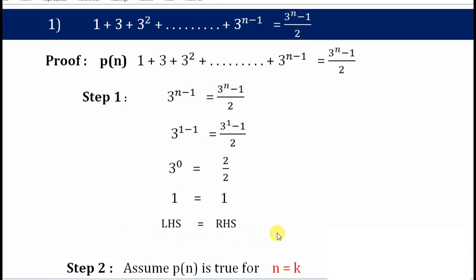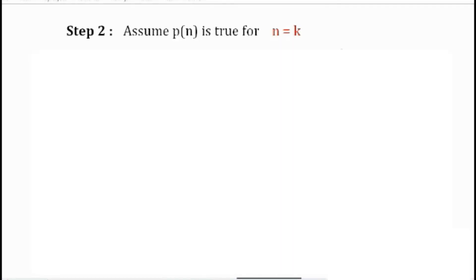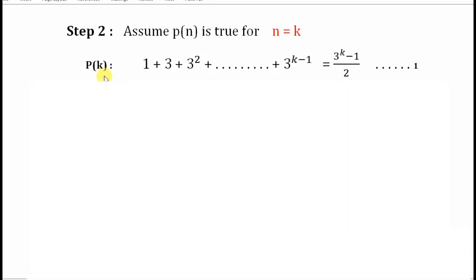In Step 2, we assume that the given statement P(n) is true for n equals k. If the statement is true for the first natural number, we assume it is true for other natural numbers also. So all the n's are replaced by k, and let this equation be called equation (1), because we will be using it in the third step.